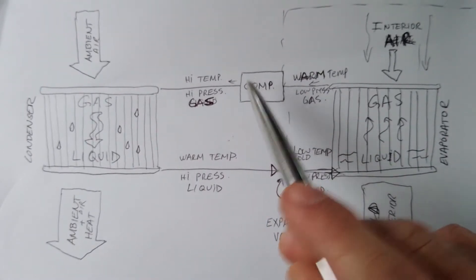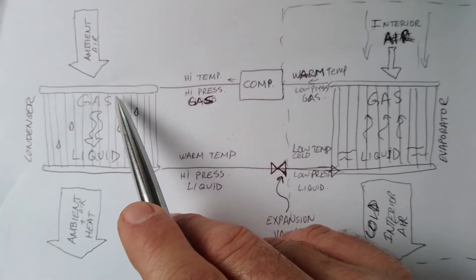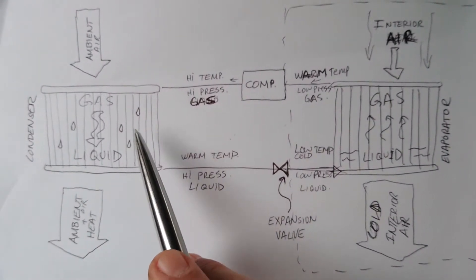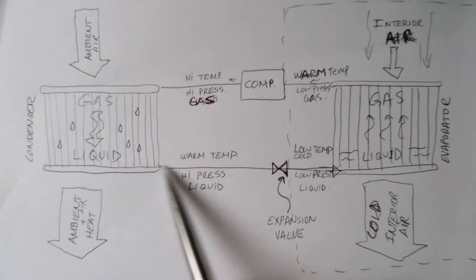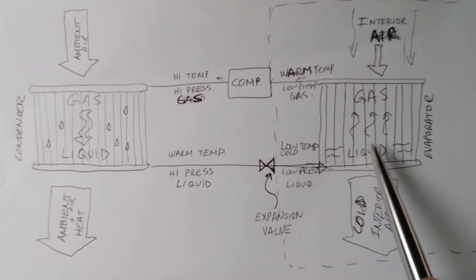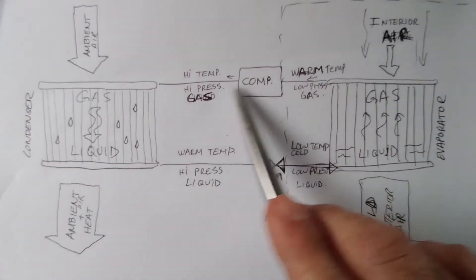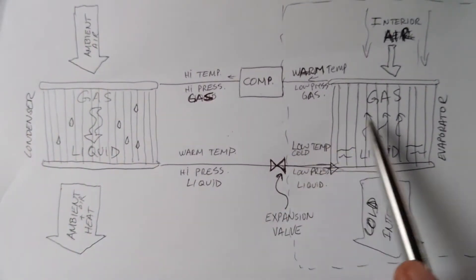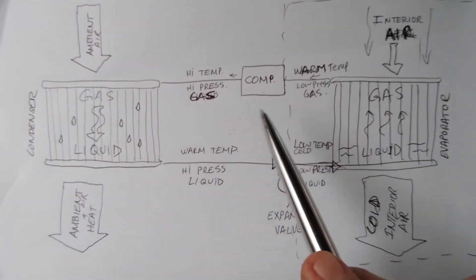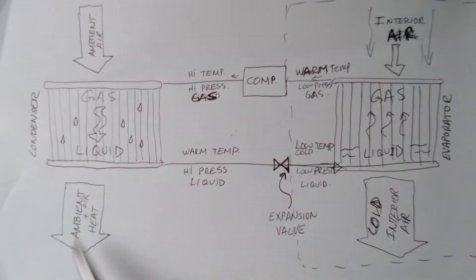Starting from the compressor: the compressor pumps the refrigerant in gaseous form, raising its temperature so it gets hot, then it goes to the condenser. Through the condenser it gets cooled — it remains at high pressure but now at a lower temperature — then through an expansion valve, then to an evaporator, and back to the compressor. The loop repeats: compressor, condenser, expansion valve, evaporator — carrying heat from inside and dumping it overboard.